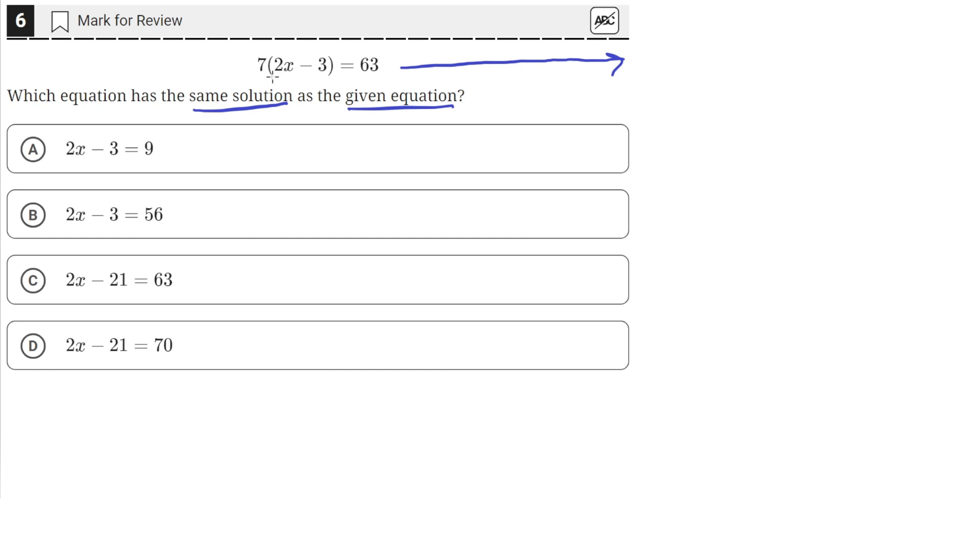So from this here, we can see that all of these answer choices, some of them have 2x minus 3, and that's inside this parenthesis here.